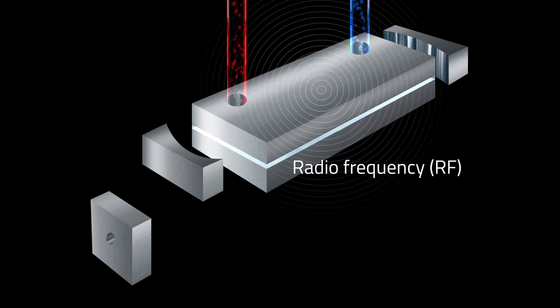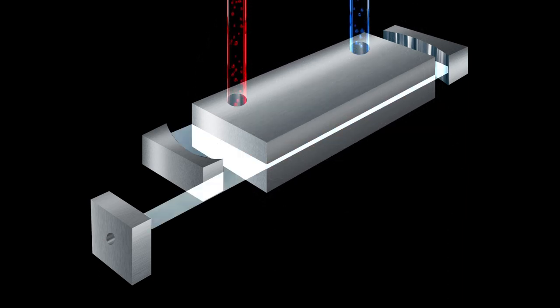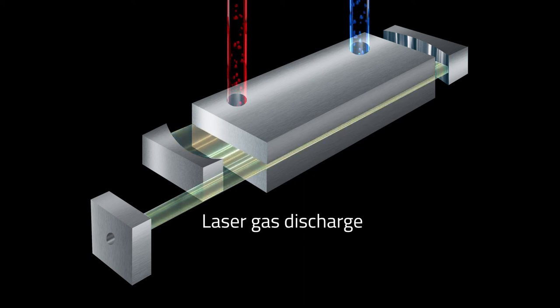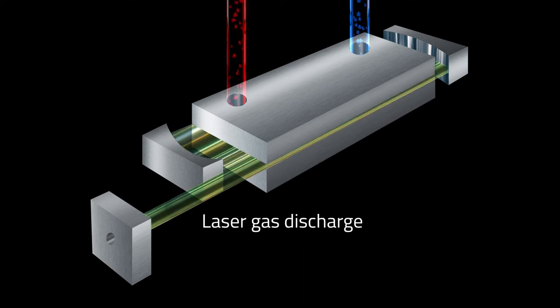RF power is applied to the electrodes, exciting a gas discharge between them. As the gas molecules lose energy, photons are emitted.